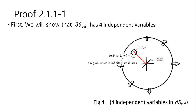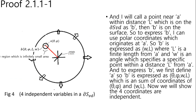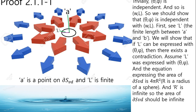First, we will show that DS3D has four independent variables. I call a point near A within distance L on DS3D as B, then B is on the surface. To express B, I use polar coordinates originating at A, so B is expressed as omega, L, where L is a planar length from A and omega is an angle specifying a specific point within distance L from A. To express B, we first define A, so B is expressed as theta phi omega L, which is a combination of coordinates theta phi and omega L.